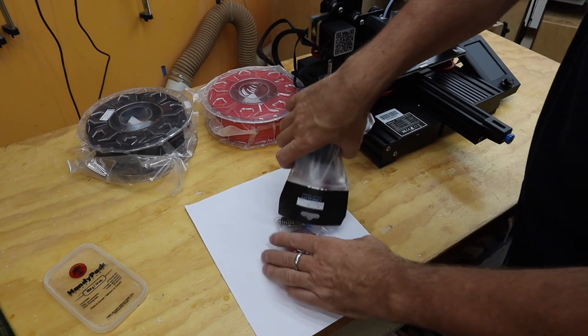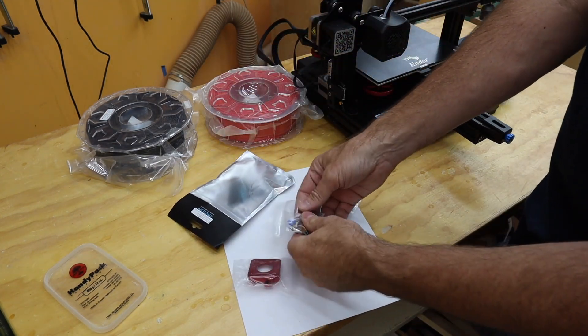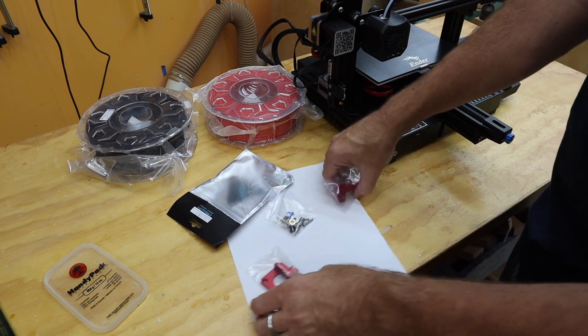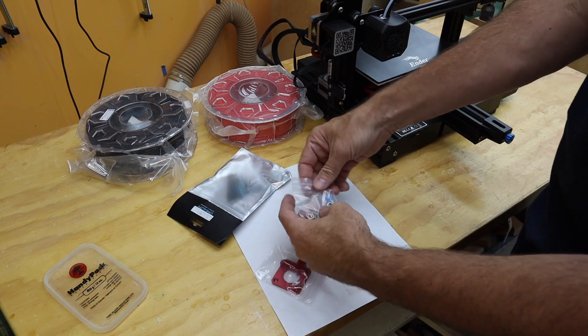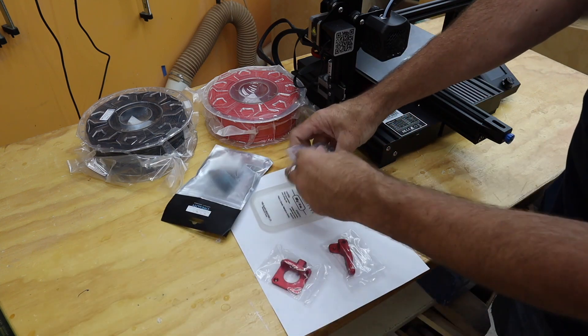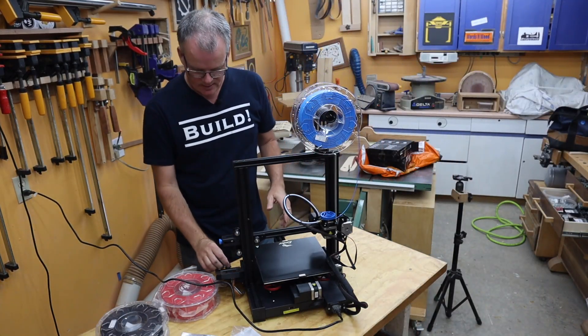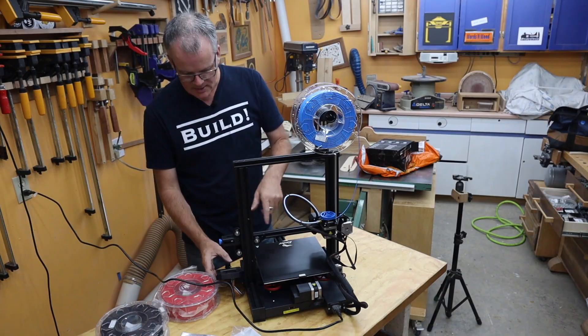So the next upgrade is this extruder kit. And as you can see, this has a lot more little pieces to it. But let's put it on a tray so they don't go rattling away. First, we need to remove the filament. So I'm going to warm up the tip.